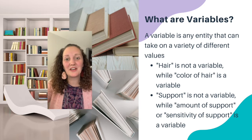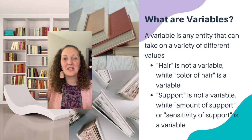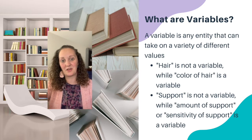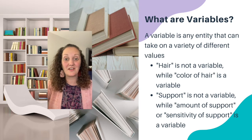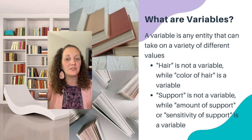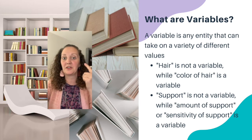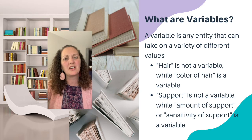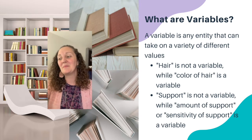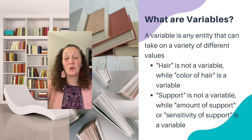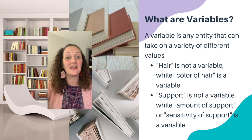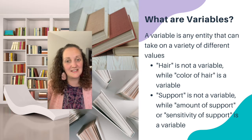So what are variables? Variables are any entity that can take on a value. It's important that you understand what isn't a variable and what is a variable. For example, just saying 'hair' is not a variable, but 'colors of hair' — something that takes on a value — is a variable. There are different values: black hair, brown hair, blonde hair, red hair, gray hair, white hair, green, purple, orange, or texture of hair, length of hair, coarseness of hair, curliness of hair. Something like that would be a variable. Just saying 'hair' is not a variable.